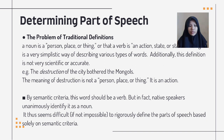Determining parts of speech. The problem with traditional definitions — that a noun is a person, place, or thing, or that a verb is an action, state, or state of being — is that it's a very simplistic way of describing various types of words. Traditionally, this definition is not very scientific or accurate. For example: 'the destruction of the city bothered the Mongols.' The meaning of 'destruction' is not a person, place, or thing — it is an action. By semantic criteria, this word should be a verb, but in effect, native speakers unanimously identify it as a noun.